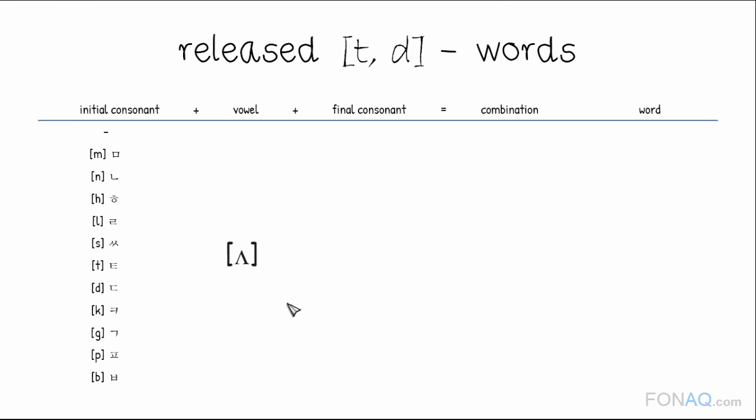For vowel, let's start with the identical vowel [ʌ] and go with t as the final consonant. Then we have the following combinations of phonemic symbols. And of all these possible phonemic combinations, the ones that are actual words are the following.